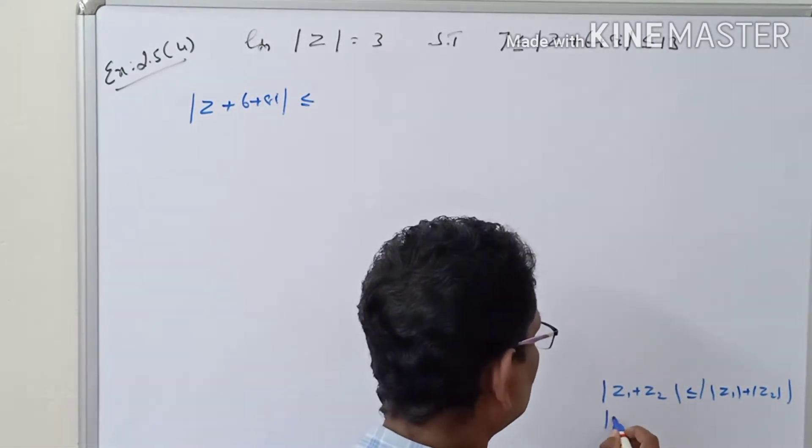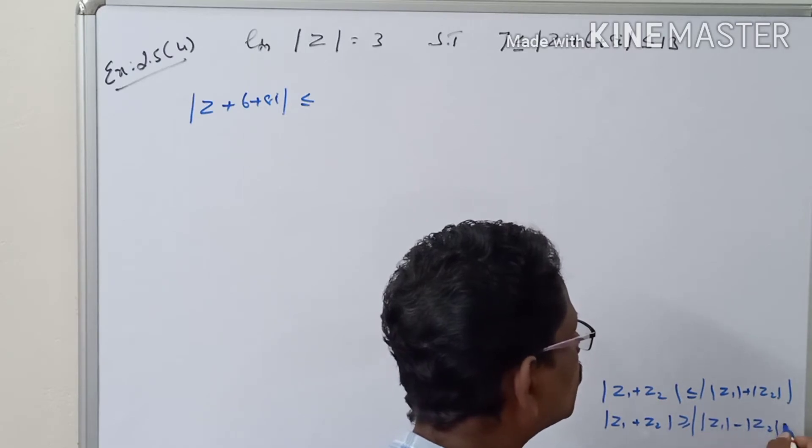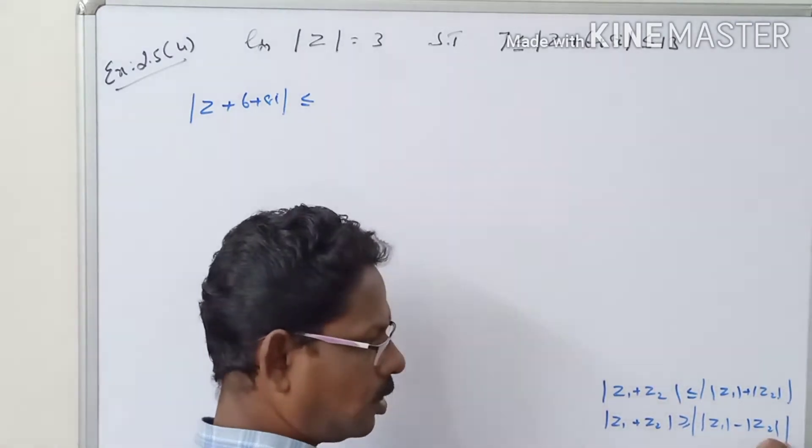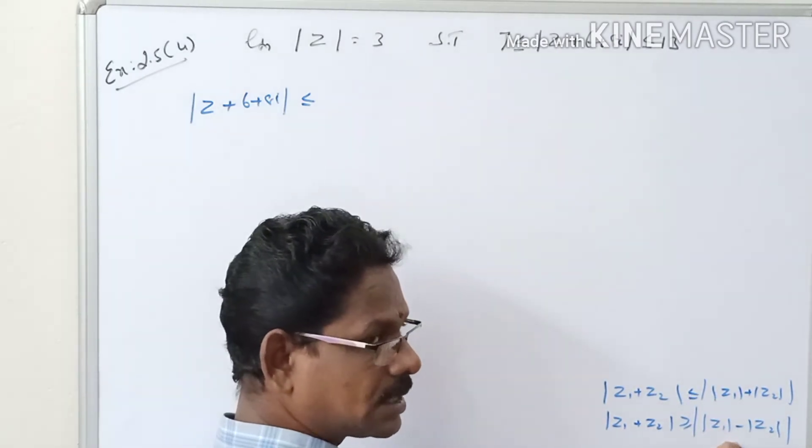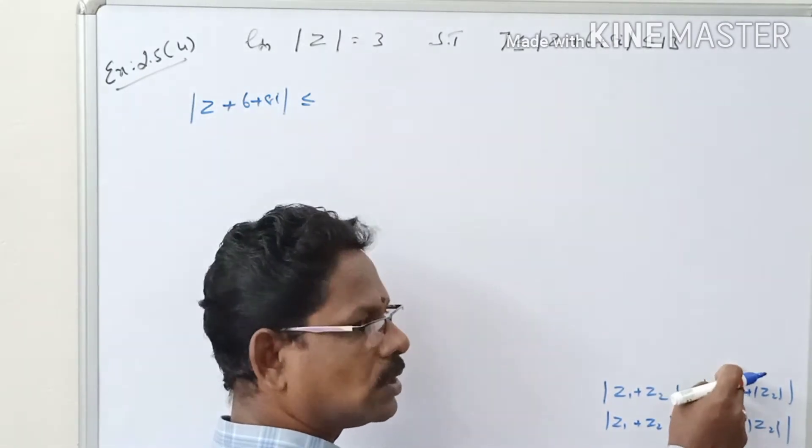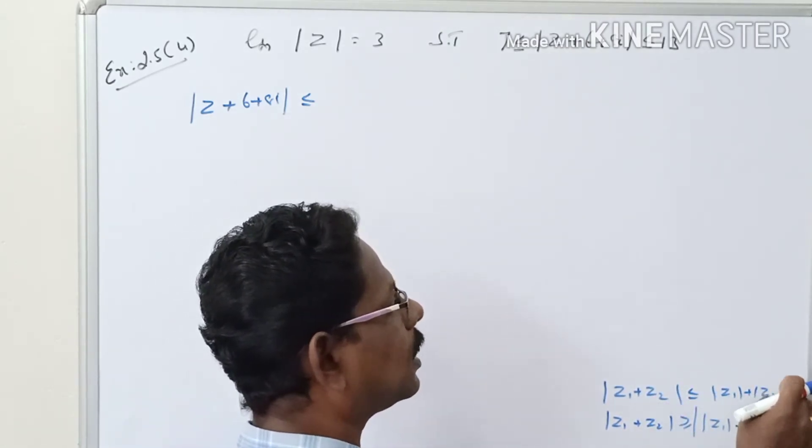So |z1 + z2| ≥ ||z1| - |z2||. Here we need the mod outside. Here no need because it is the difference. Maybe it is negative or positive. It is always positive, so no need the mod as well.